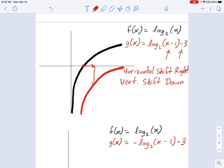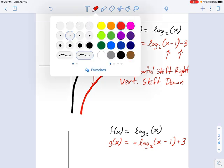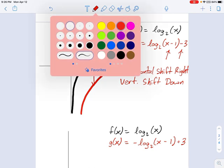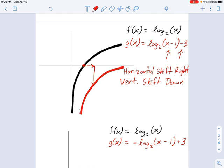The important part when you're drawing these logarithms is you really need to get that asymptote correct. Whereas the asymptote used to be at x = 0 in the parent function, now it's at x = 1. That was the horizontal shift right.